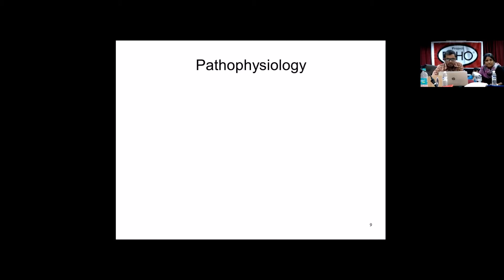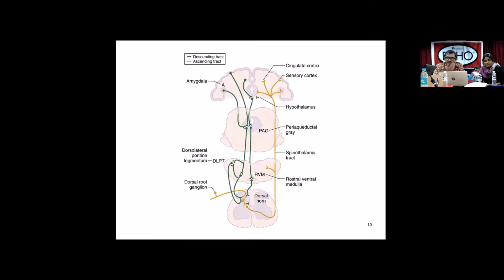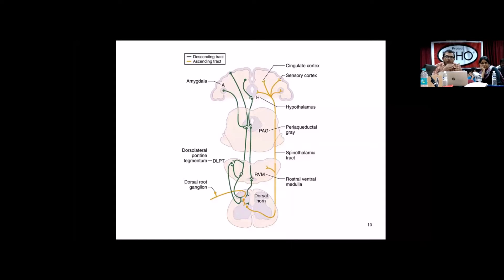Pain is transmitted through A-delta and C fibers, up through the dorsal root ganglion, then through the spinothalamic tract. There are essentially two pathways: one directly to the sensory cortex — the sensory discriminative pathway — and the other is the affective motivational pathway, which is the actual feeling of the pain. In addition, there is a descending tract where the opioidergic pathway mitigates the painful stimulus, which is where our opioid drugs come into play.